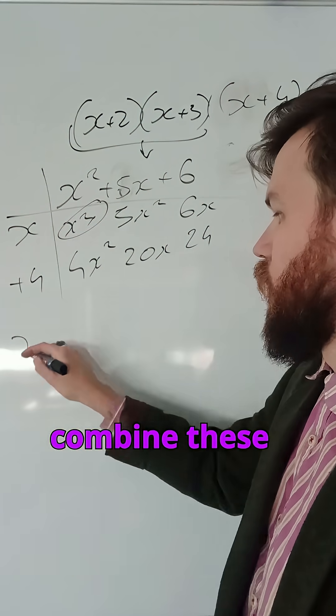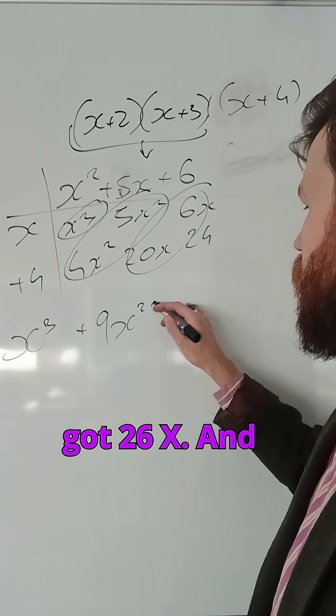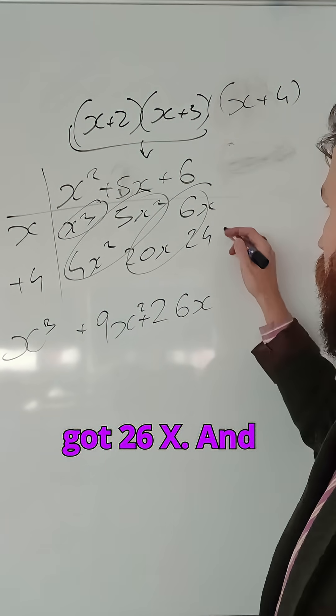Now I can combine these parts. I've got x cubed, 9x squared, 26x, and 24.